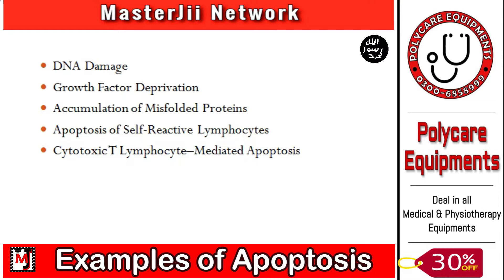If the damage cannot be repaired, it will trigger apoptosis. Pro-apoptotic members will increase. When the p53 protein has a mutation or is absent, apoptosis will not happen. Instead, the cell with DNA damage will undergo mutations and DNA rearrangement, leading to neoplastic transformation.